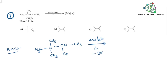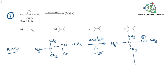First, Br comes out. Whenever Br comes out, you get a carbocation — a 2nd degree carbocation. But when compared to 2nd degree, 3rd degree is more stable. That is why here a methyl shift is taking place.